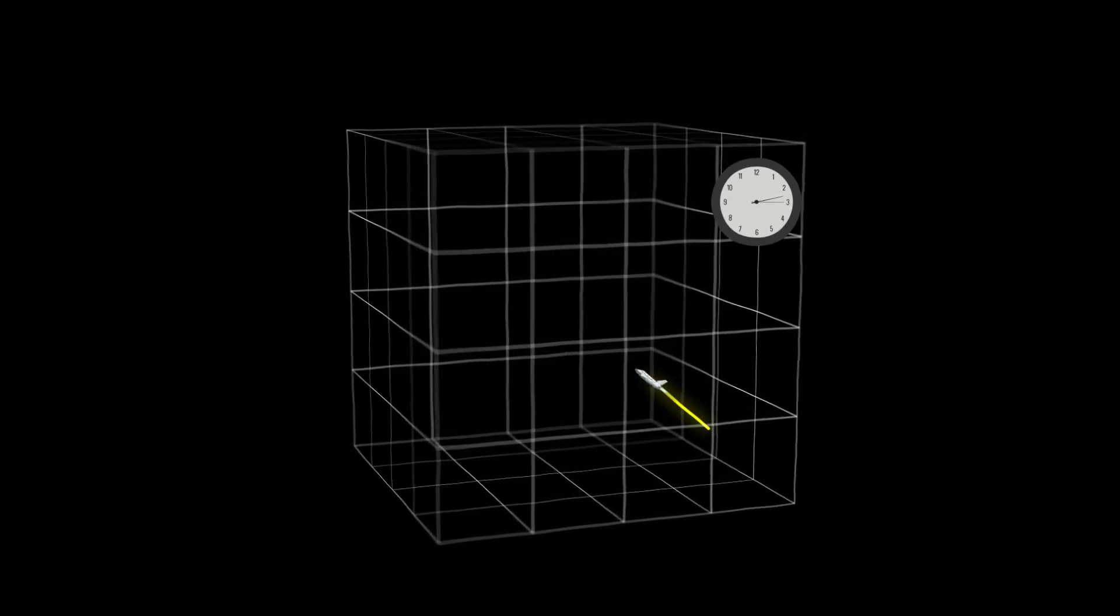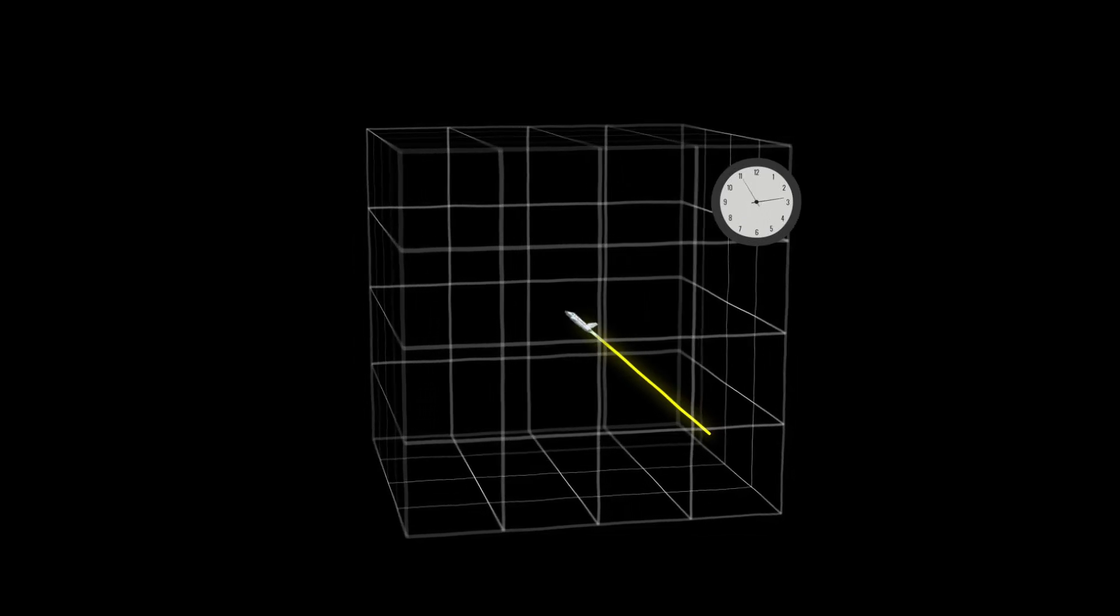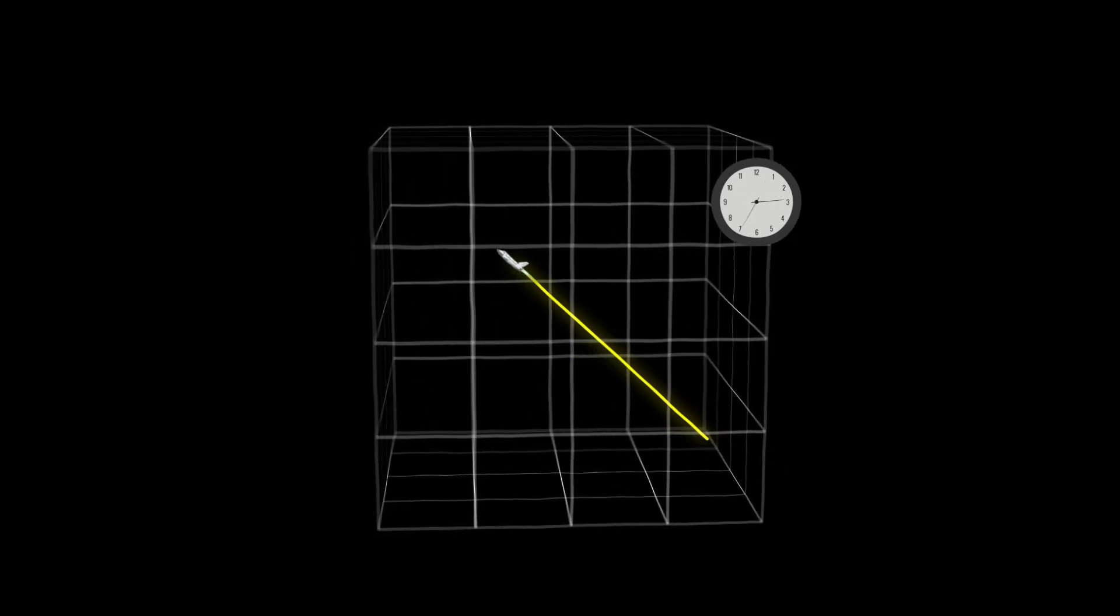Inside spacetime, the history of an object's location through time traces out a line or curve, referred to as the object's world line.